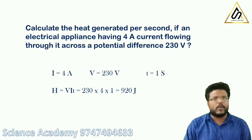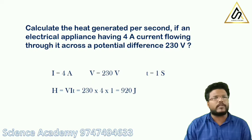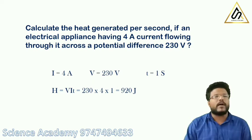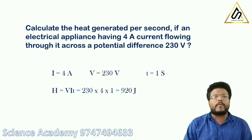With V equal to 230, I equal to 4, and time equal to 1 second, the heat generated per second is 920 joules. That is the heat generated per second for this appliance.